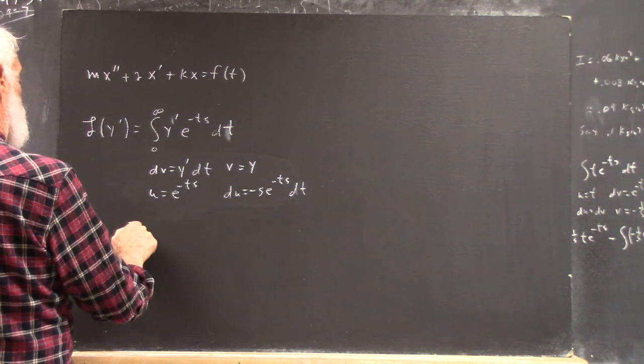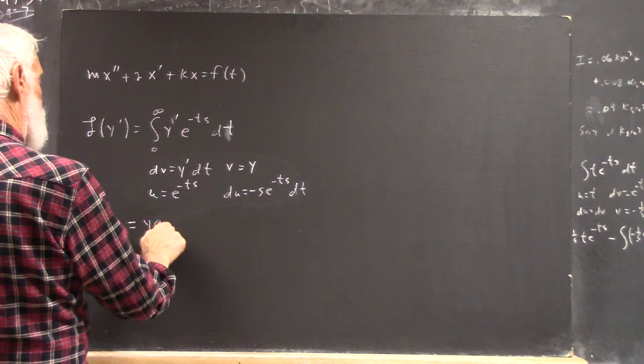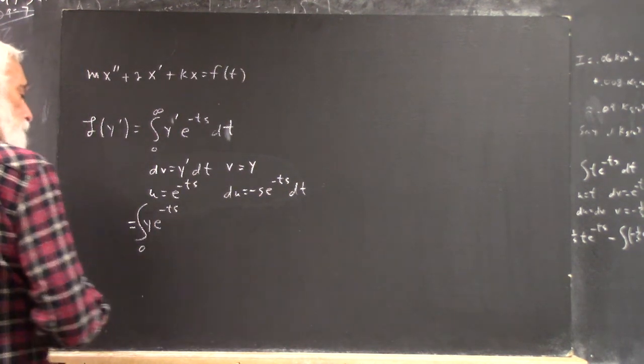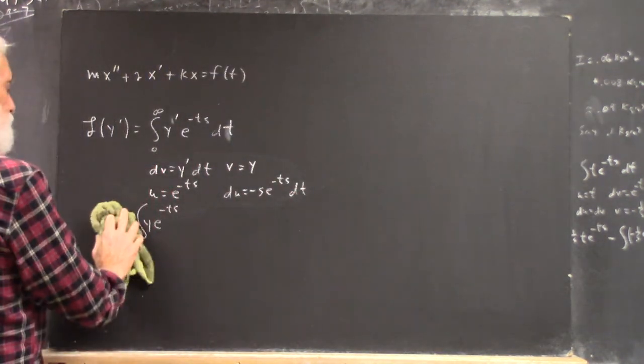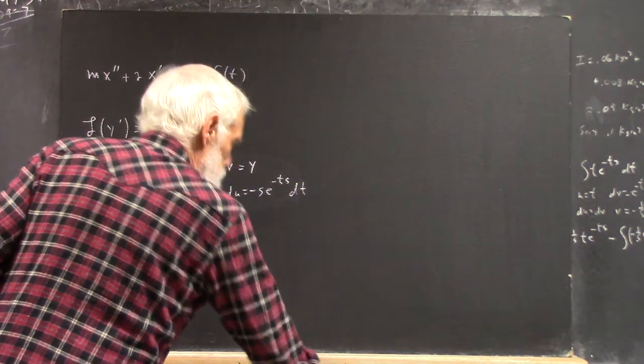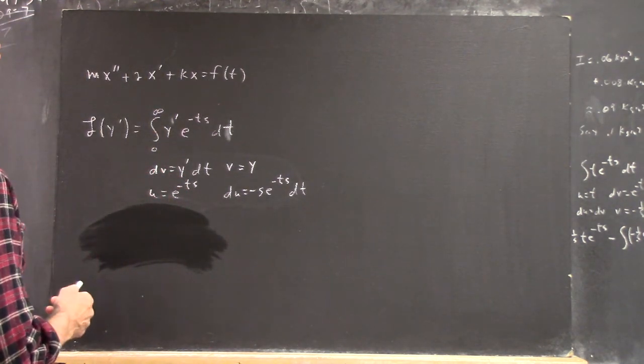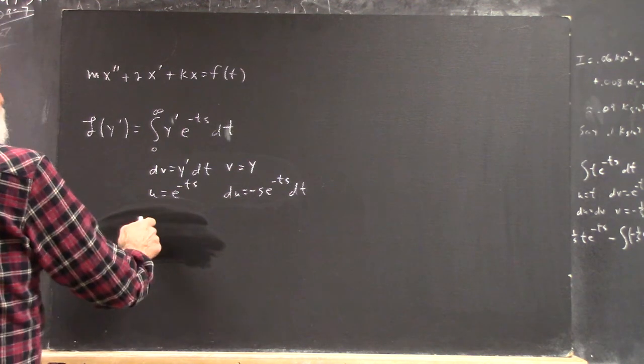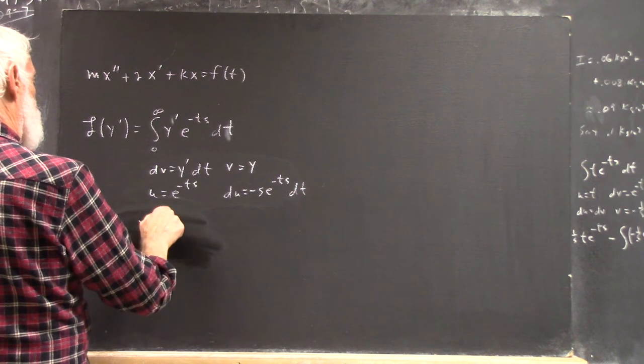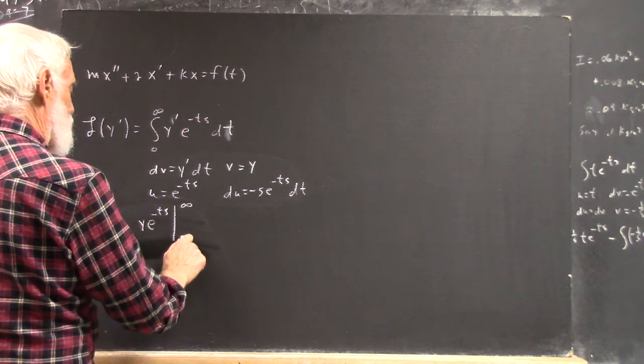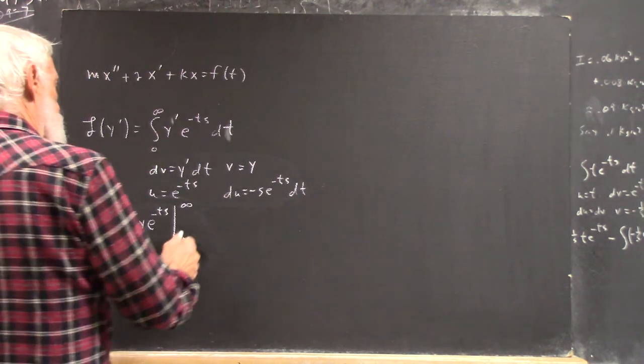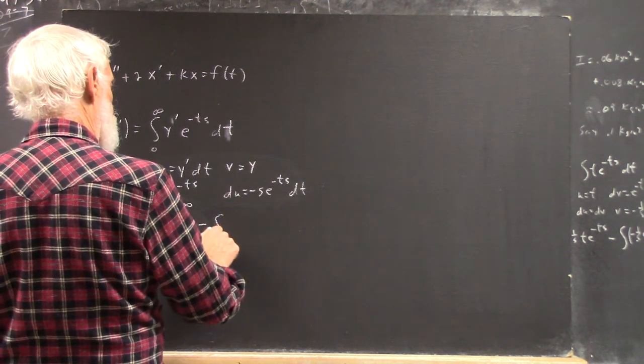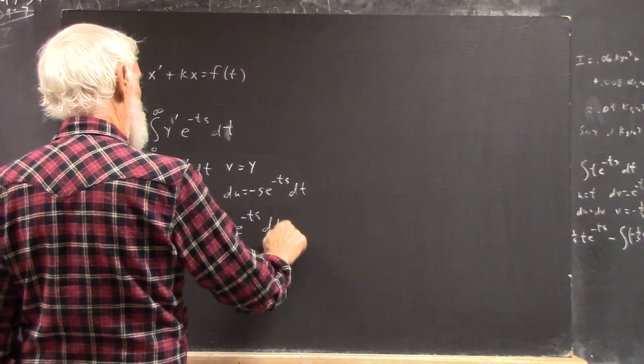So that you get uv, which is y e to the negative st, and of course evaluated from zero to infinity. So it's uv. Oh man. I thought this was going to get worse. It's y e to the negative st evaluated infinity to zero. And then it's minus the integral of v du, which is the integral of, well, that's s y times e to the negative st dt.